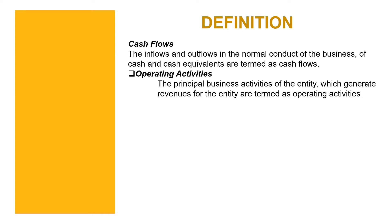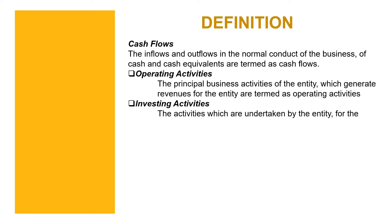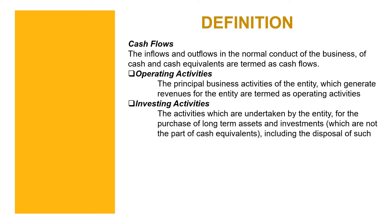Operating activities are the principal business activities of the entity which generate revenues — for example, buying and selling goods or manufacturing products. Investing activities are undertaken by the entity for the purchase of long-term assets and investments which are not part of cash equivalents, including the disposal of such long-term assets. Investments with a term of more than three months are not part of cash equivalents and are therefore part of investing activities.